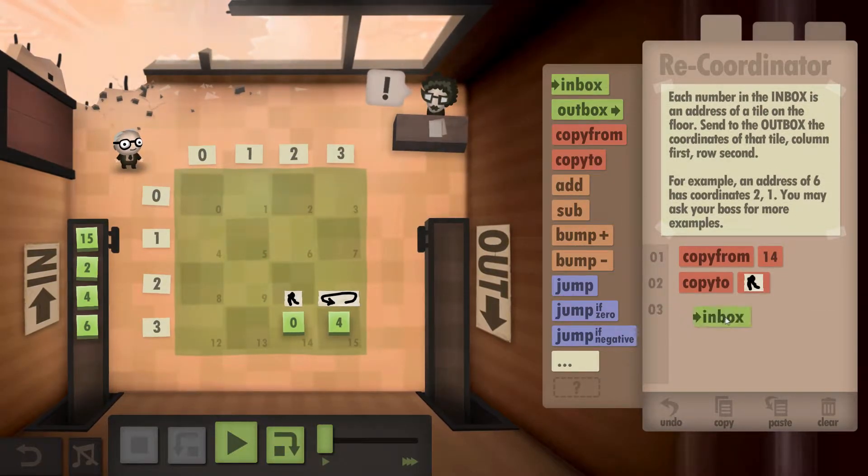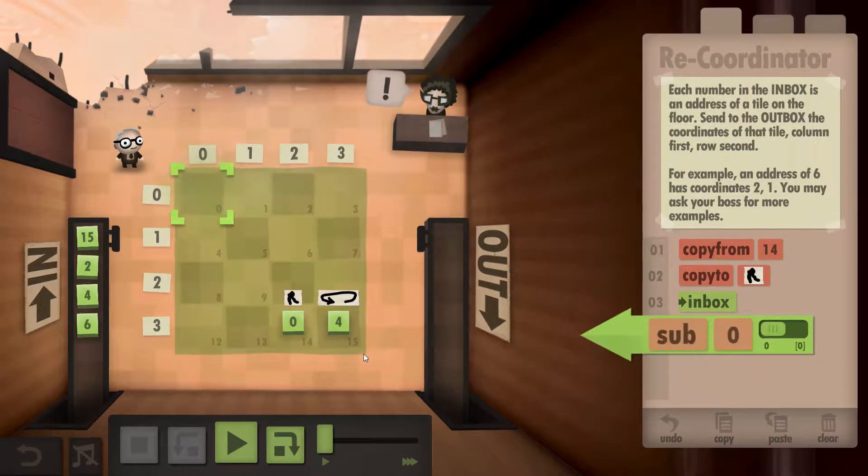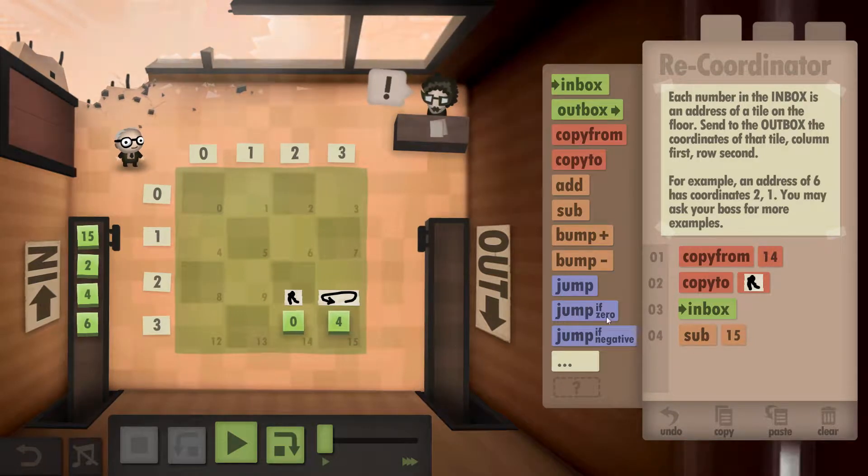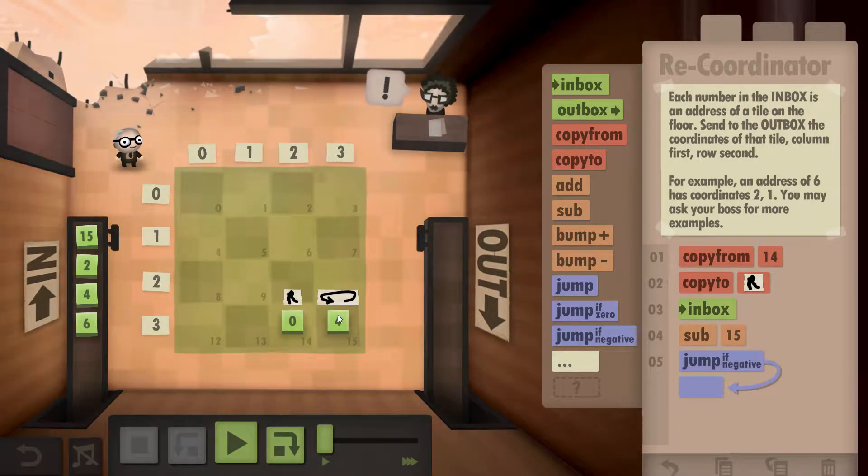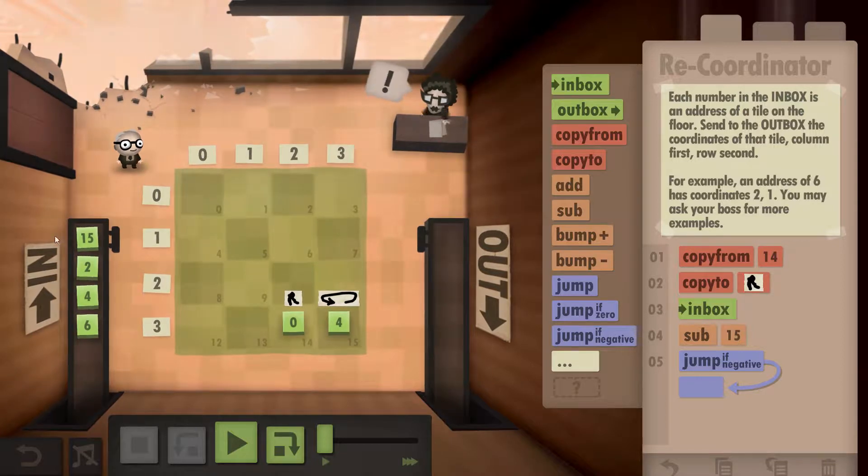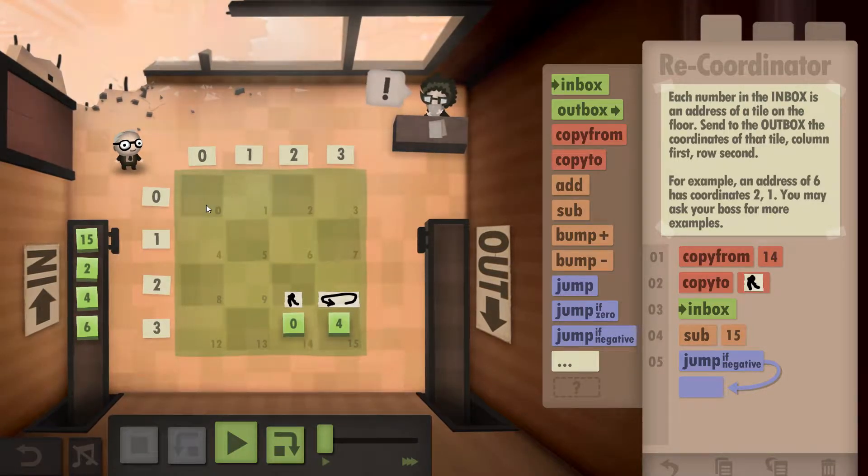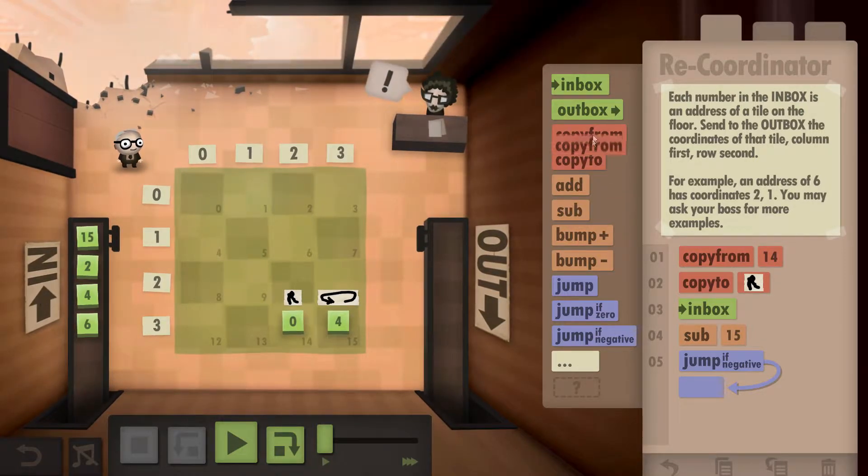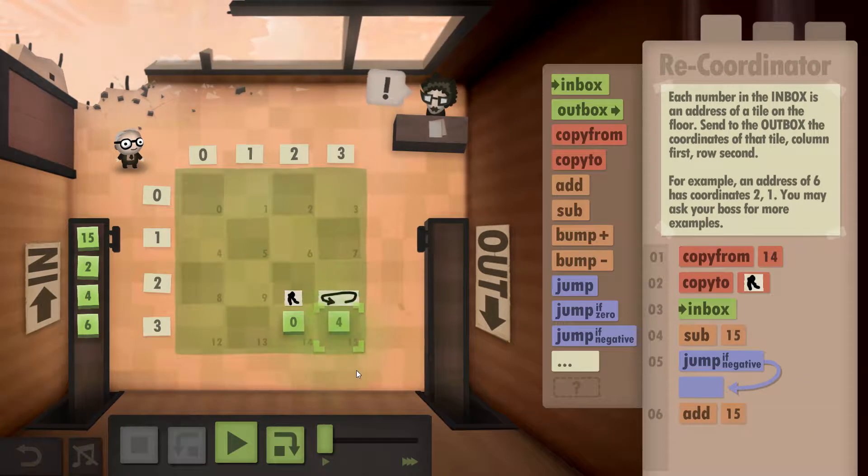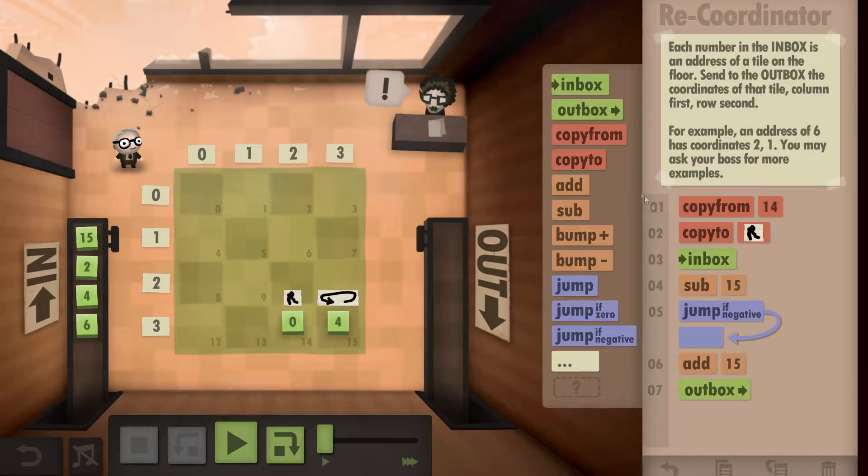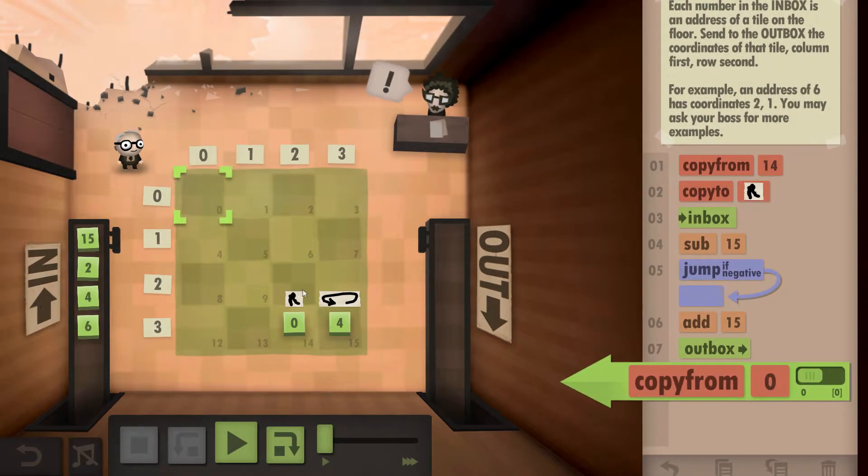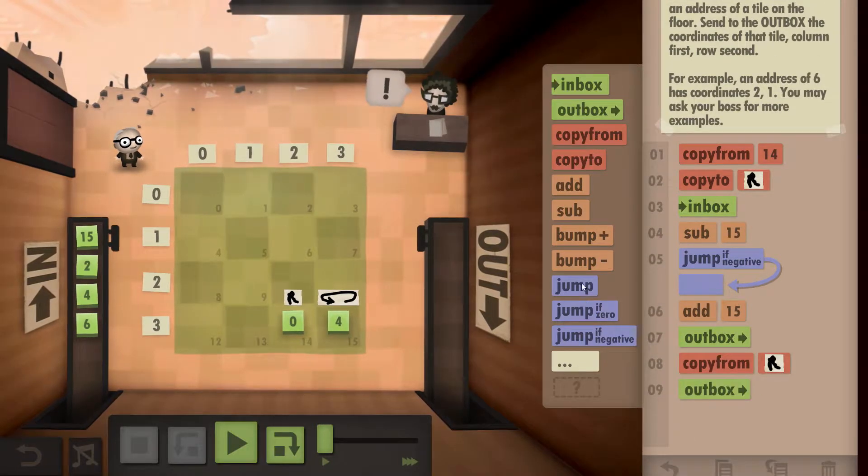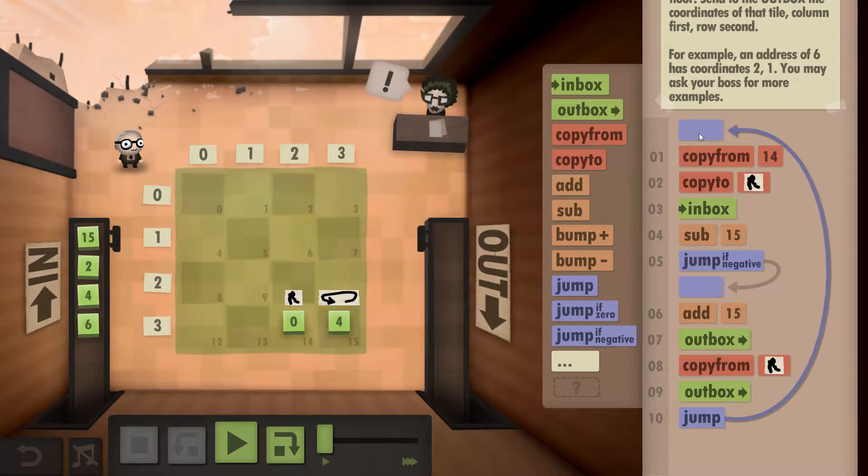Once we've done that, we can go to the inbox and we are going to subtract a four from it. The reason we're doing that is if it spits out a negative, we know that the one we got out of the inbox must have been a three, two, one, or zero. If that's the case, we can add the four back on to get back to the original number. We are going to outbox it and then grab the row, which is a zero in this case, and outbox it. We can then jump back to the start.